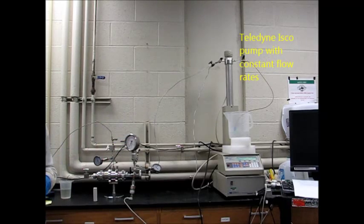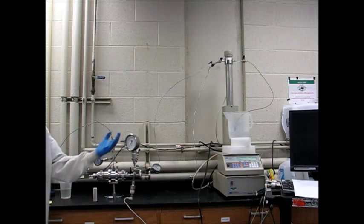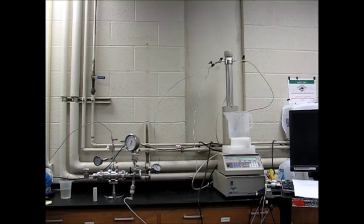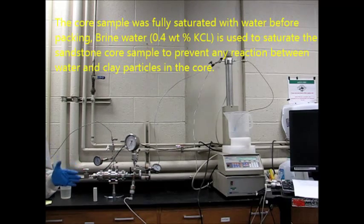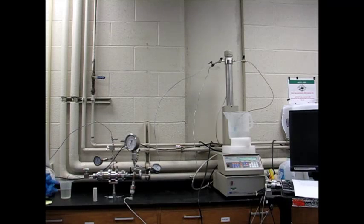First, the core was fully saturated with water or brine. The brine has 0.4 weight percent KCl. Brine water is used to saturate the sandstone core to prevent any reaction between water and clay particles inside the core.